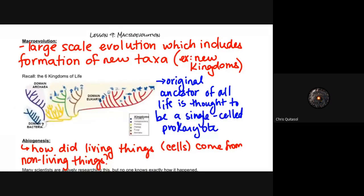Okay, welcome to Lesson 9, the last lesson in our evolution unit. Today we're going to be looking at macroevolution, which is large-scale evolution that incorporates the idea that new taxa or new kingdoms are formed. We're looking at the big evolutionary jumps that happen as a result of many, many generations of natural selection.